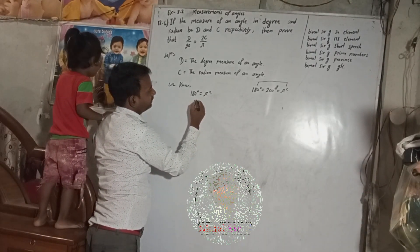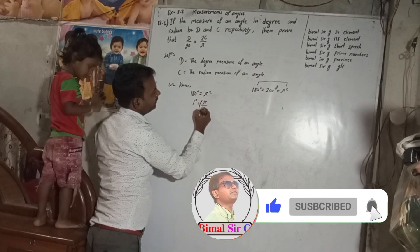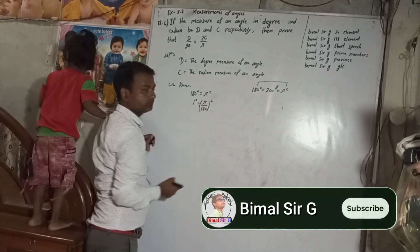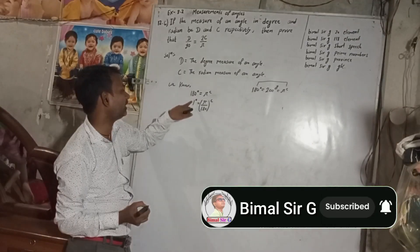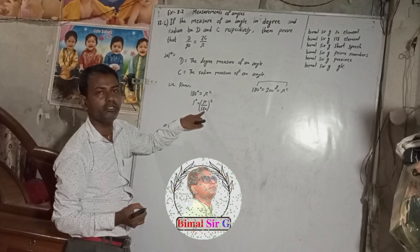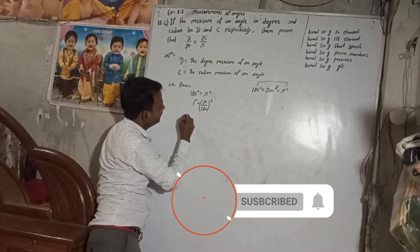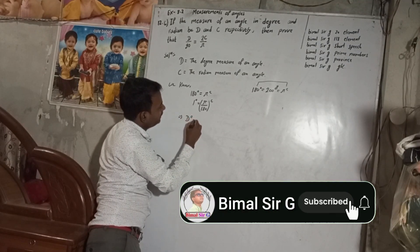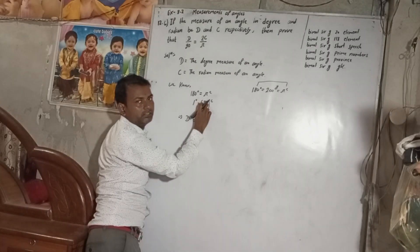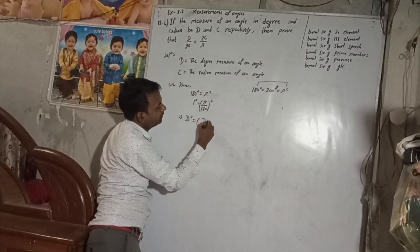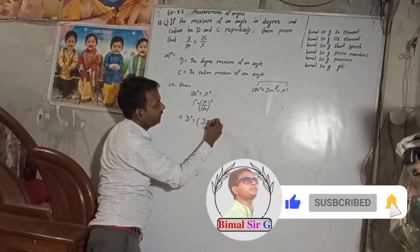From this, we can write one degree is equal to Pi by 180 radian. By the unitary method, in place of 180 we write one, and 180 comes to the denominator. So D degrees is equal to D times Pi by 180 radian.